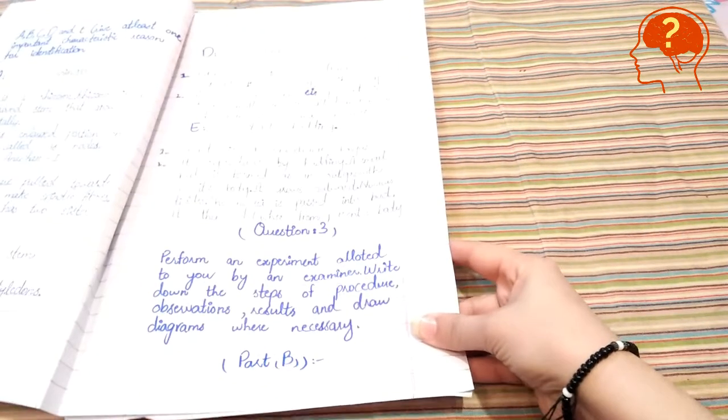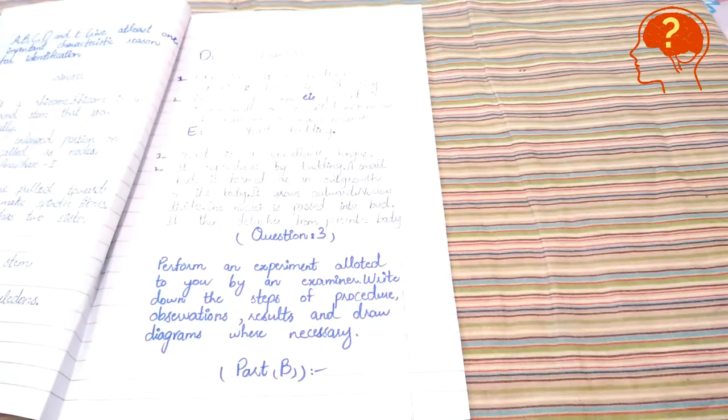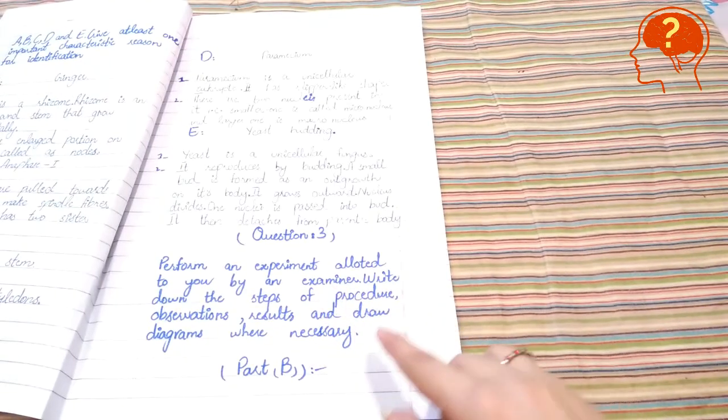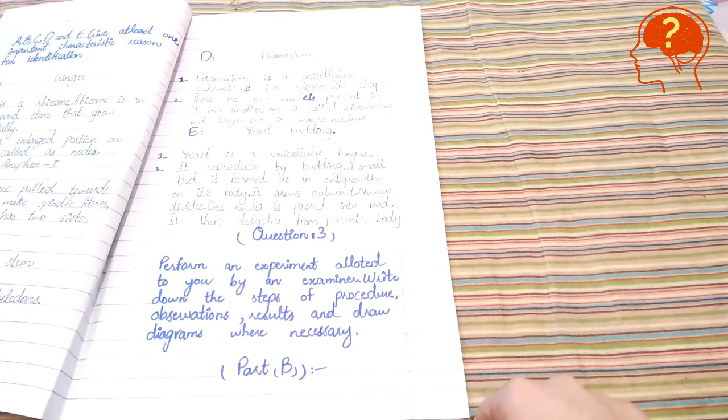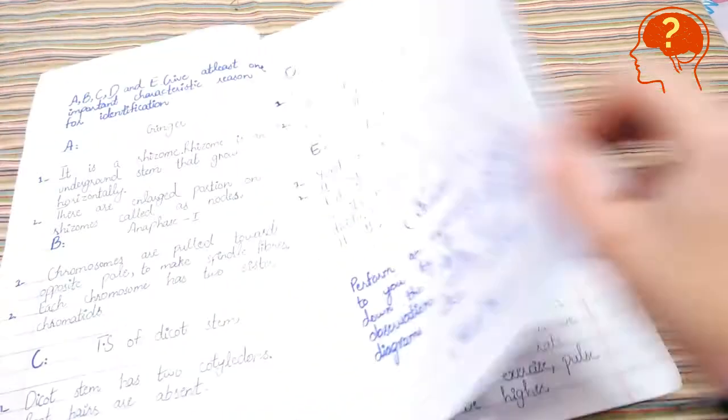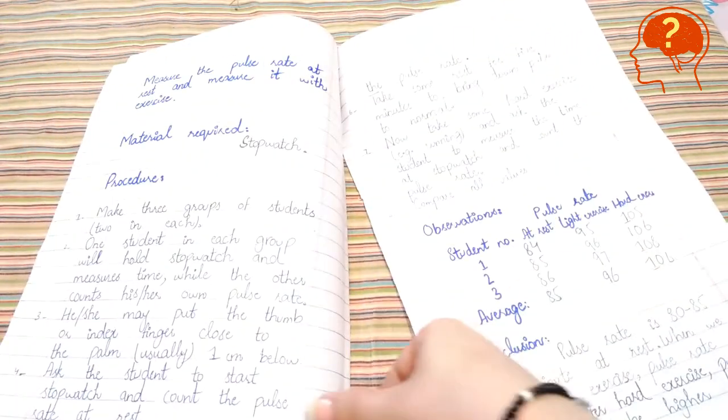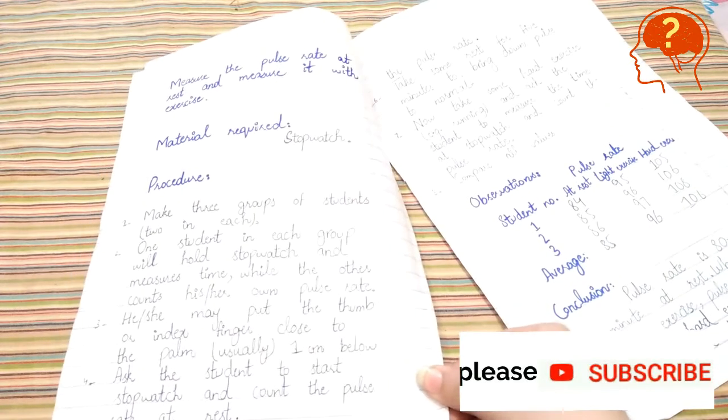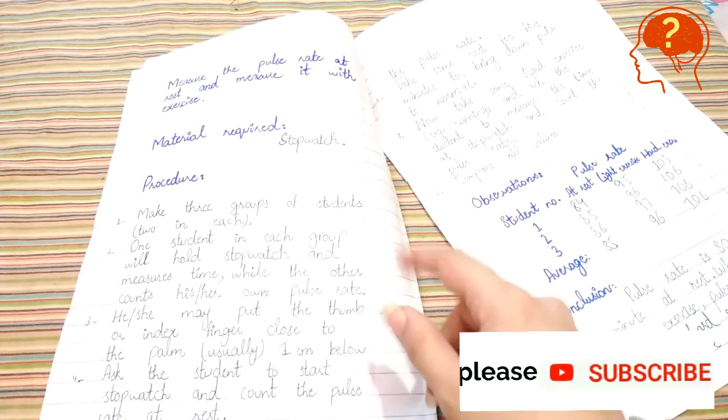Now question number three: perform an experiment allotted to you by an examiner. Write down the steps of procedure, observation, results, and draw diagrams where necessary. In this question, I provided him measure the pulse rate at rest and measure it after exercise.